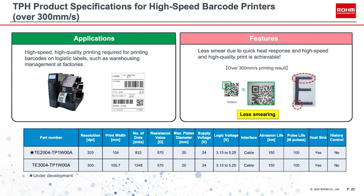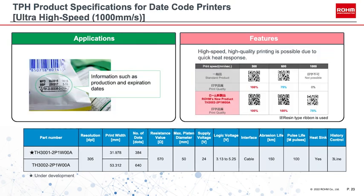Adopting a proprietary substrate material allows Roam Semiconductor to provide high-speed printing superior to other companies. For date code printers, we offer a lineup of 1- and 2-inch printers with resolutions of 300 dots per inch, with plans to add a 4-inch lineup in the future. Continuous printing is necessary for applications such as printing on food packaging. These thermal print heads use Roam's original substrate material that dramatically improves both high-speed print quality and durability, providing higher performance than competitors in image quality and reliability.